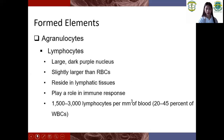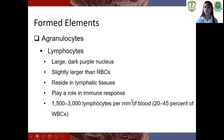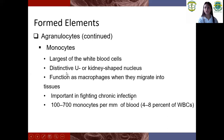So for agranulocytes — remember, agranulocytes lack visible granules. There are two types: lymphocytes and monocytes. Lymphocytes have a large dark purple nucleus. Monocytes are the largest of the white blood cells.